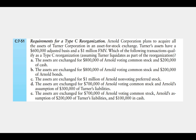In (b), the assets are exchanged for $800,000 of Arnold voting common stock and $200,000 of bonds. This also qualifies because voting equity still makes up 80% of the transaction. In (c), the assets are exchanged for $1,000,000 of Arnold non-voting preferred stock. This is not a Type C because Type C requires at least 80% voting stock. So this does not qualify as a C — we could check if it qualifies as an A, but it does not qualify as a C.